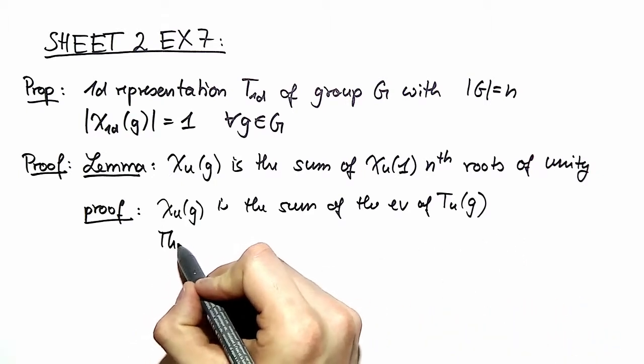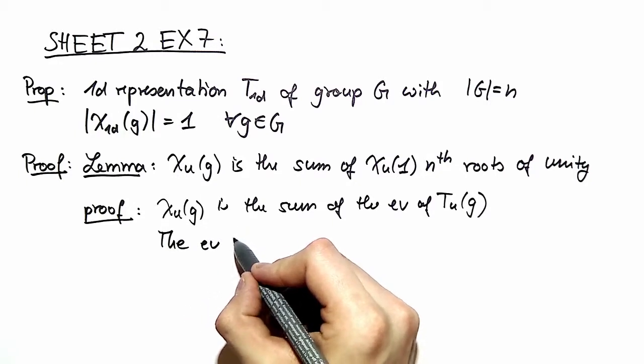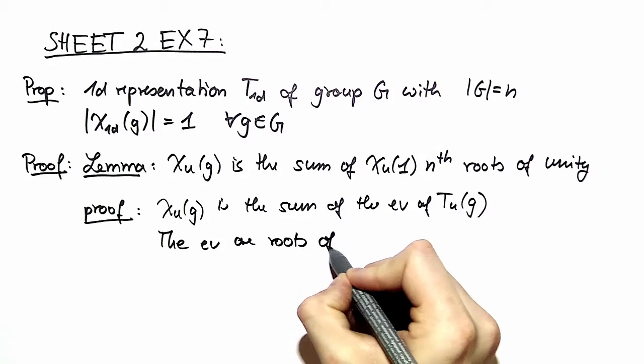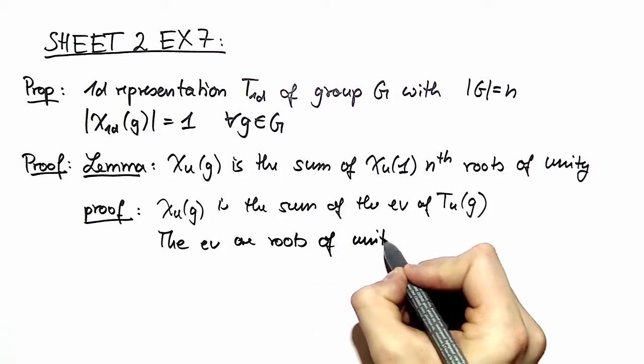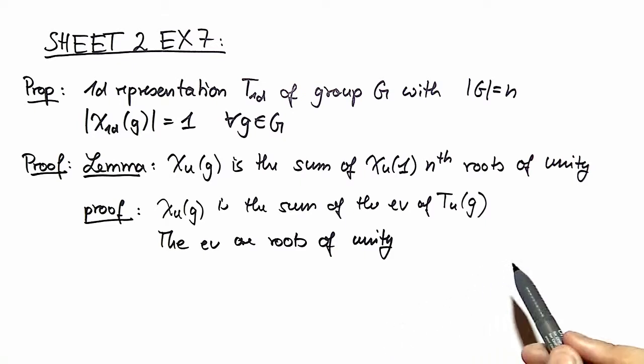Then when we're talking about these eigenvalues we notice that these are roots of unity because you have x to the n minus 1 equal to 0 and then you regroup that equation so you take the nth root of unity.